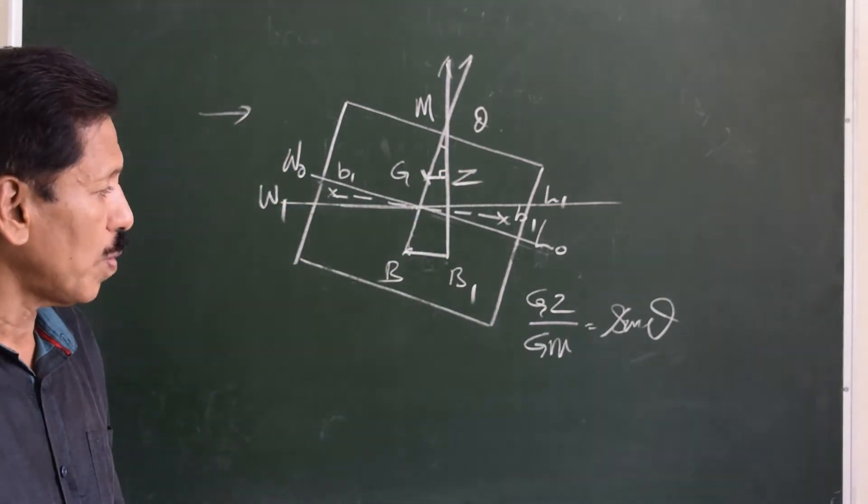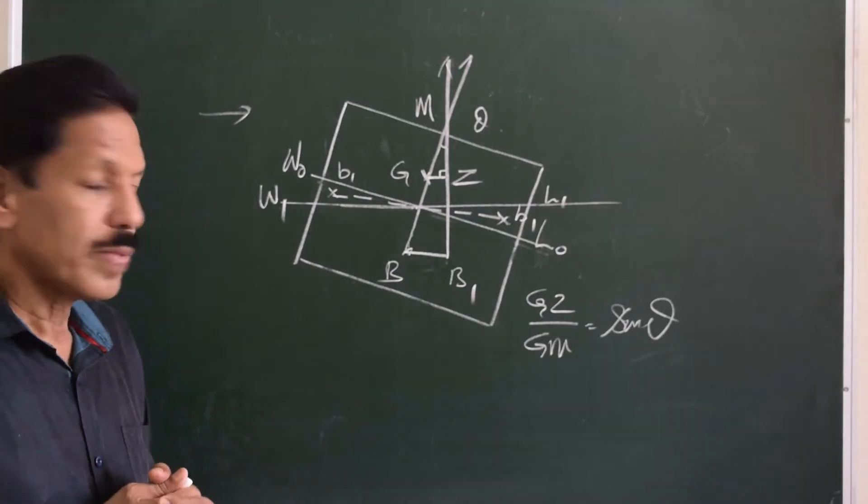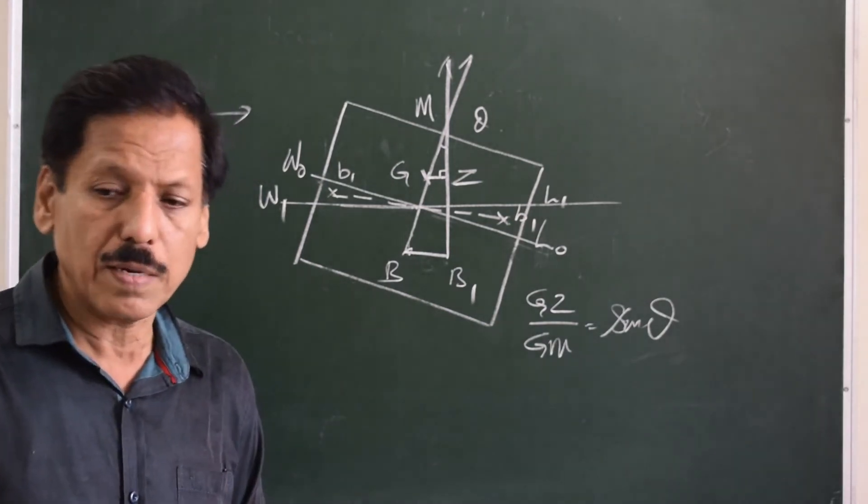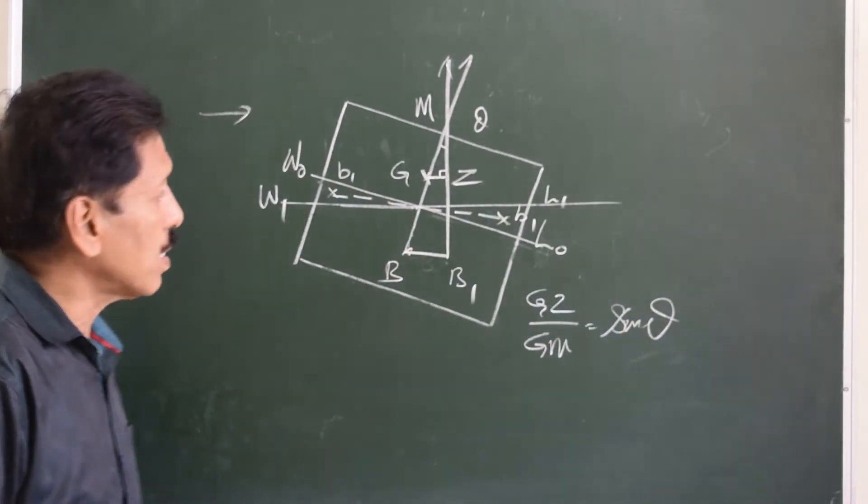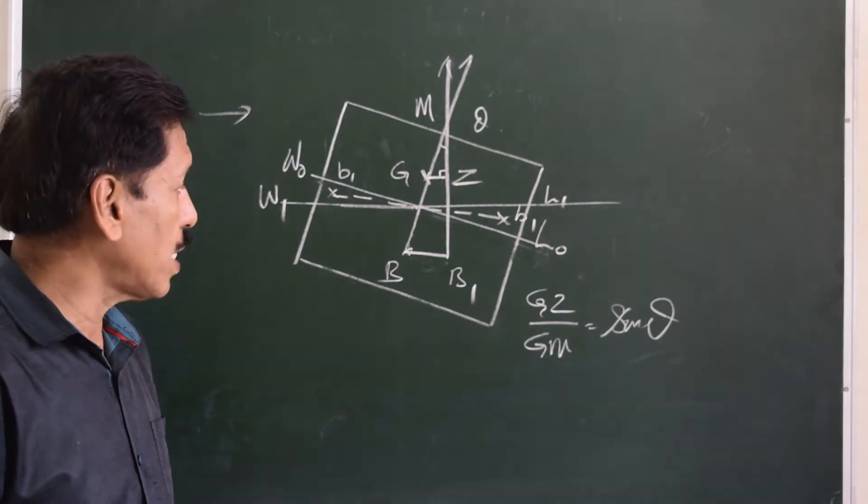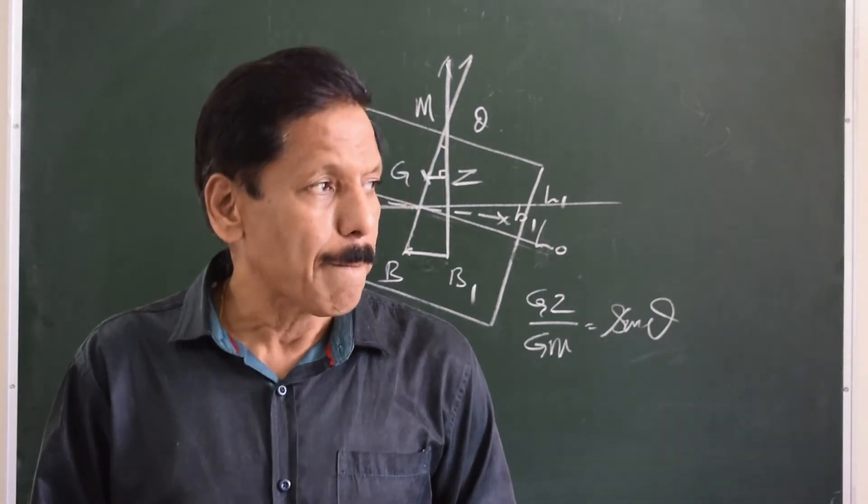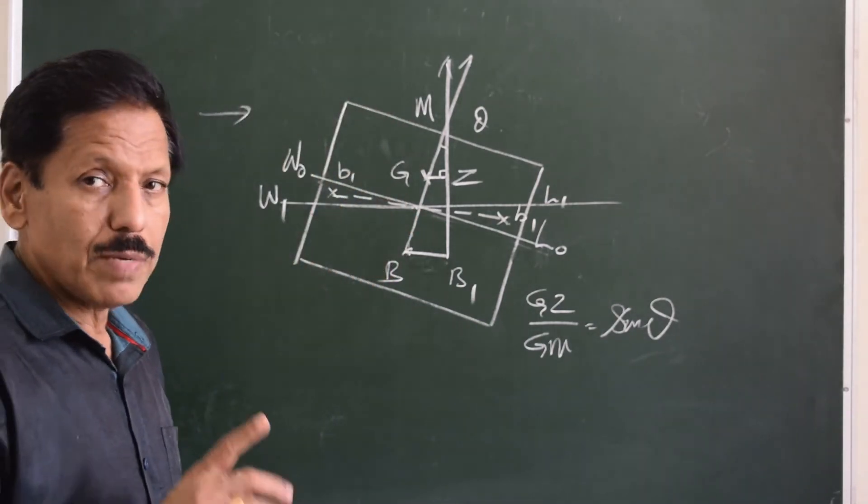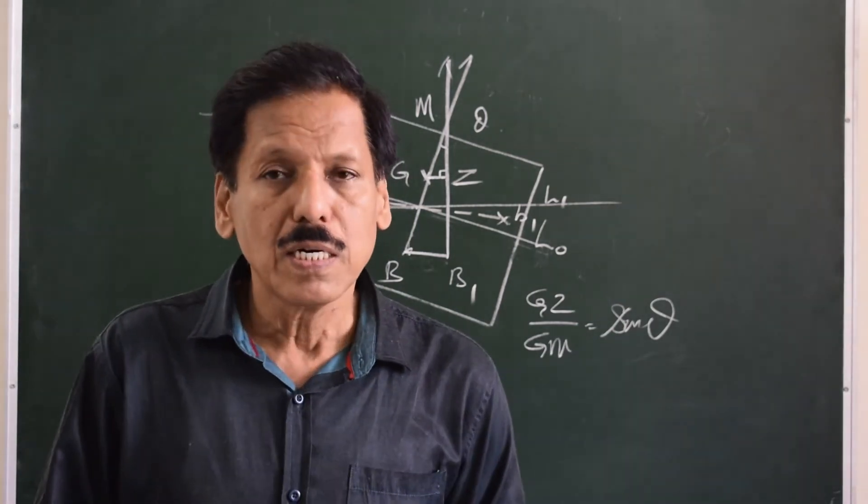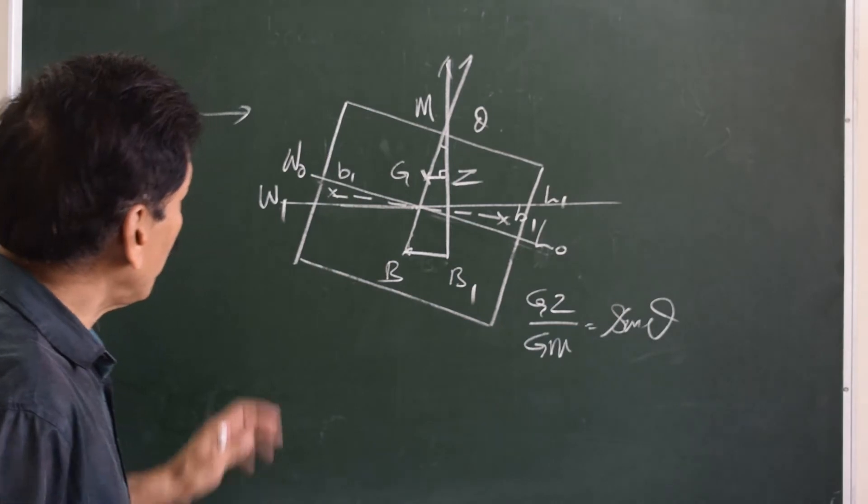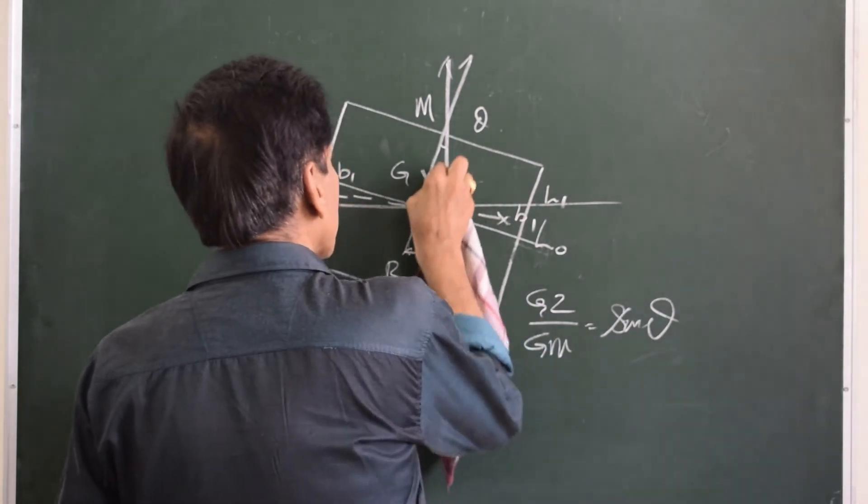Having understood this heel diagram, I would like to talk about the list diagram. There are minor changes. In any drawing, particularly of stability and ship construction, it is very important to know the correct sequence of drawing. If your sequence of drawing is correct, most likely you will not make a principal error. The initial inclination of the ship is the same.